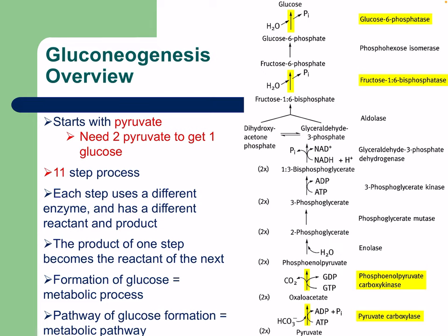Gluconeogenesis starts with pyruvate — you need two pyruvates to get one glucose, just as one glucose yields two pyruvates. Gluconeogenesis is an 11-step process where each step uses a different enzyme and a different substrate, and the product of one step becomes the reactant of the next. The pathway is quite similar to glycolysis in reverse, but with several key differences and unique steps.